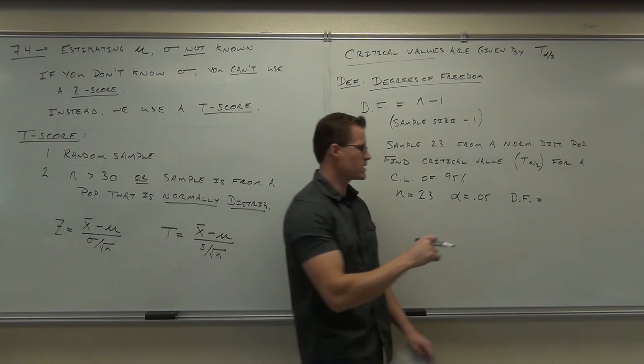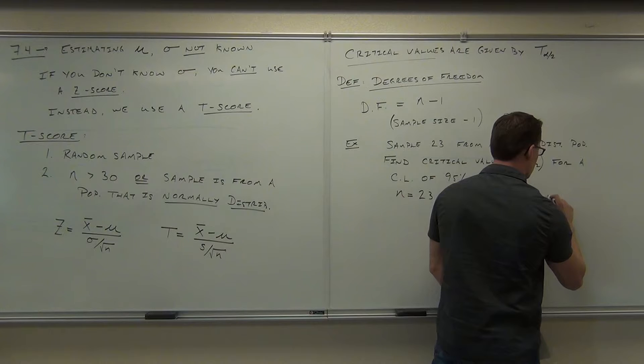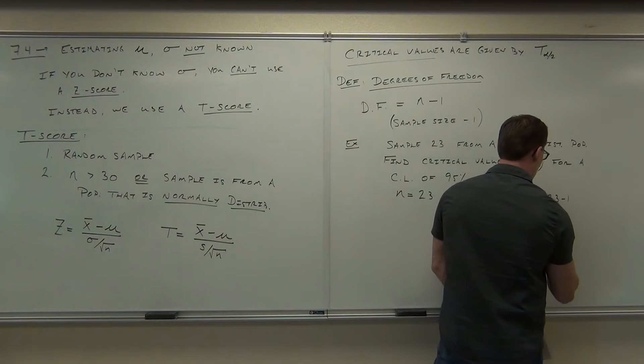You just subtract 1 from that. So degrees of freedom is the sample size minus 1, or 22.